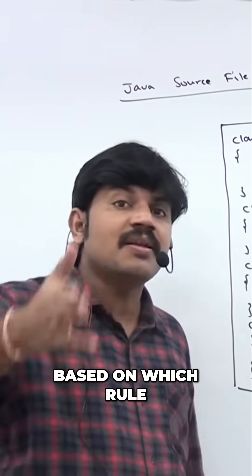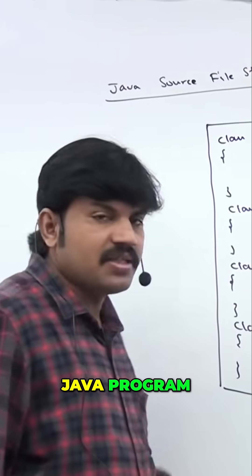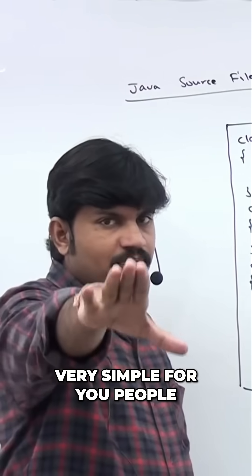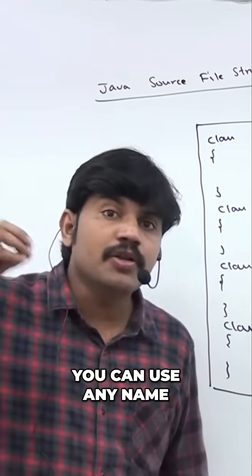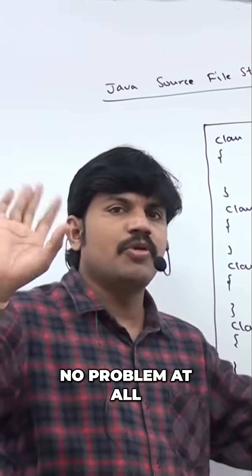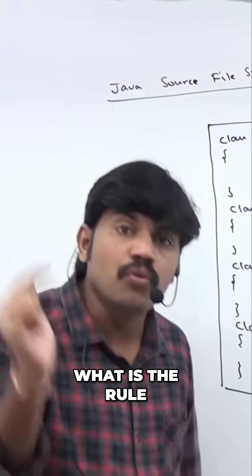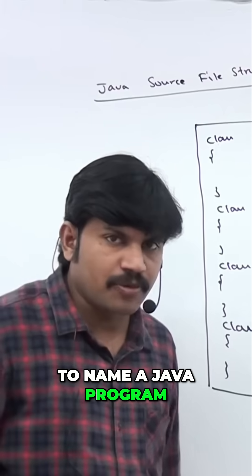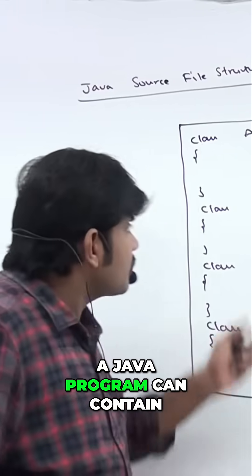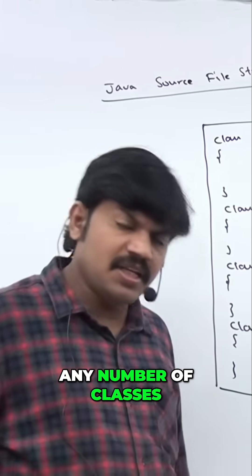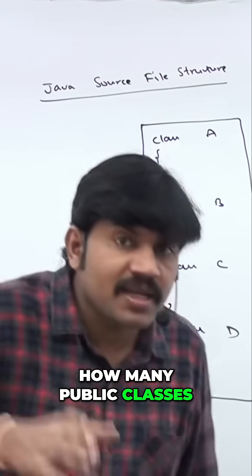Based on which rule do we name the Java program? It's very simple: for this example, you can use any name — no problem at all. Any name is fine. A Java program can contain any number of classes. Now, how many public classes can we take?